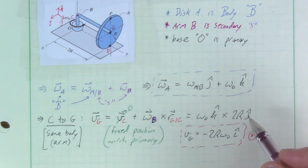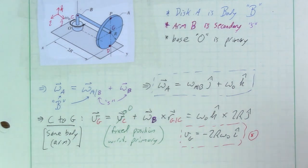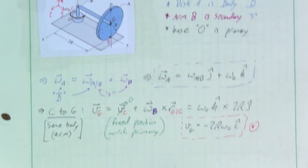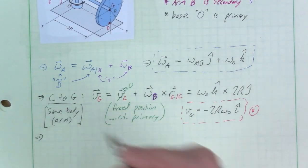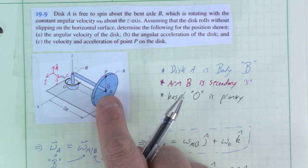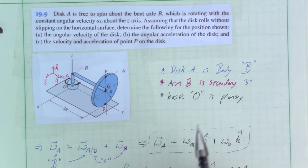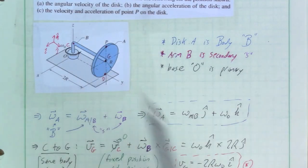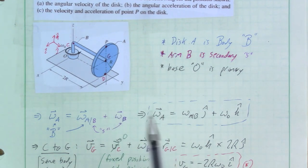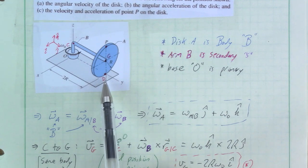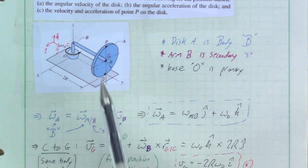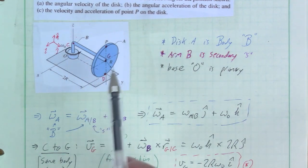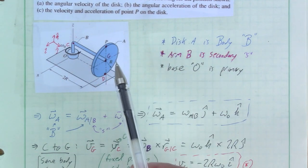Now we need another expression for v_G using a different known point. Point D at the contact point is also not moving currently — that's the rolling with no slip condition. So D has zero absolute velocity with respect to the primary reference frame.